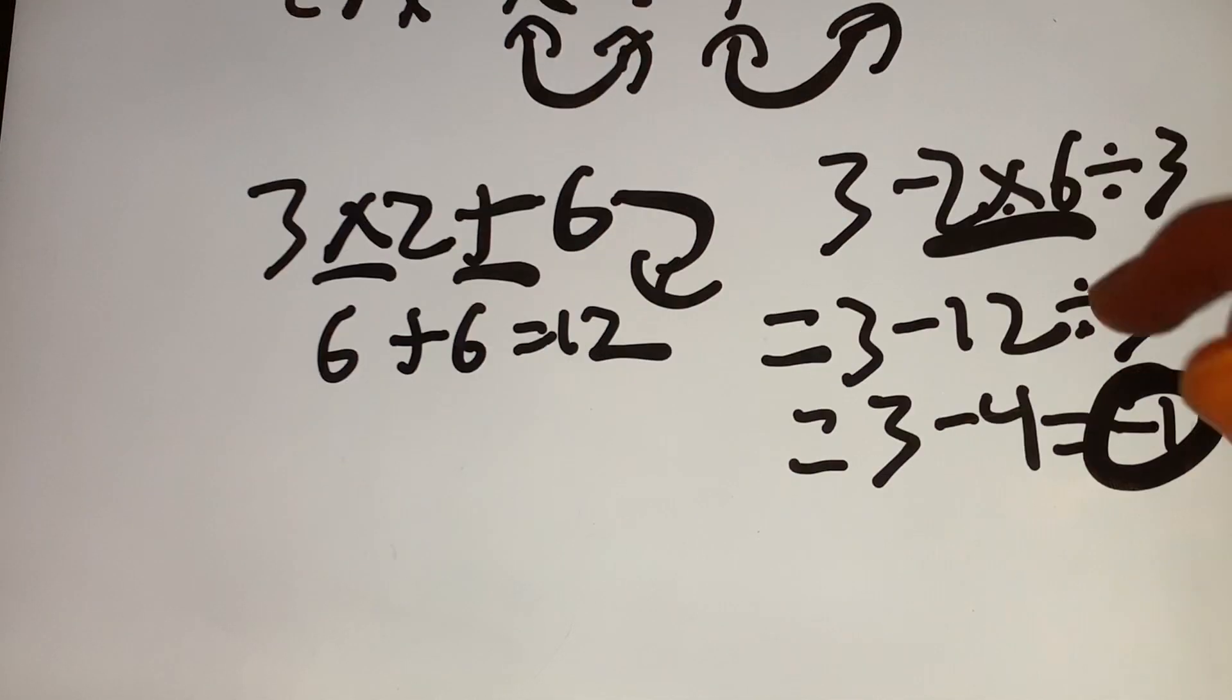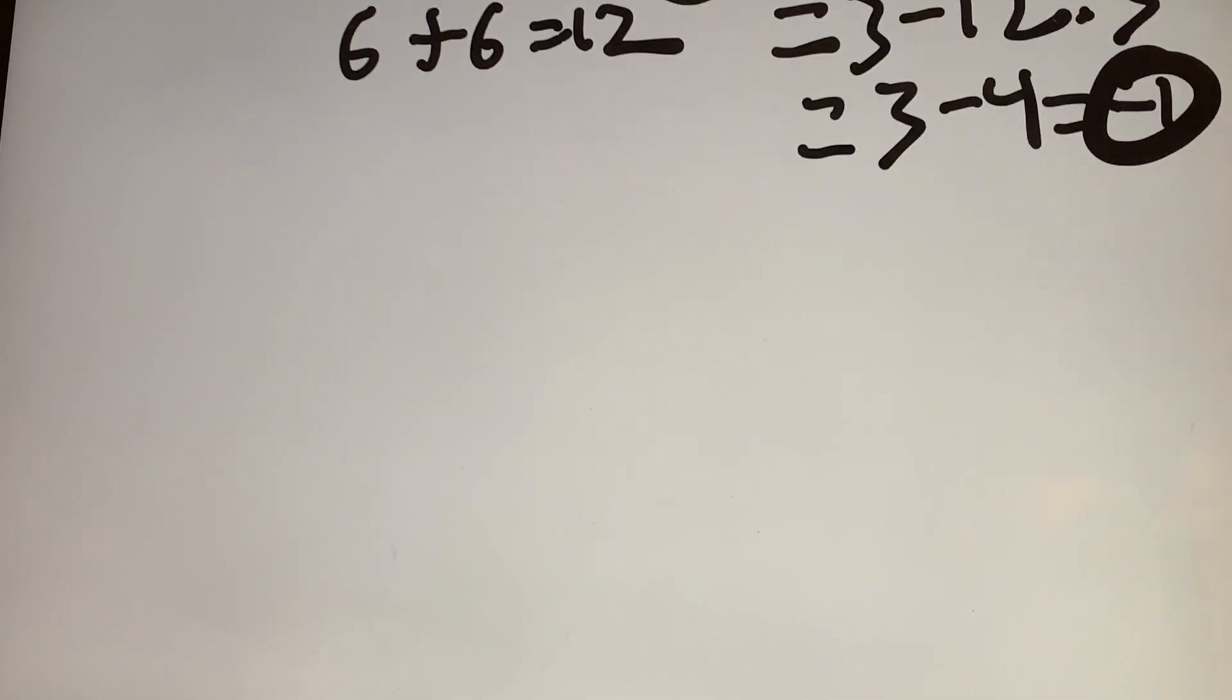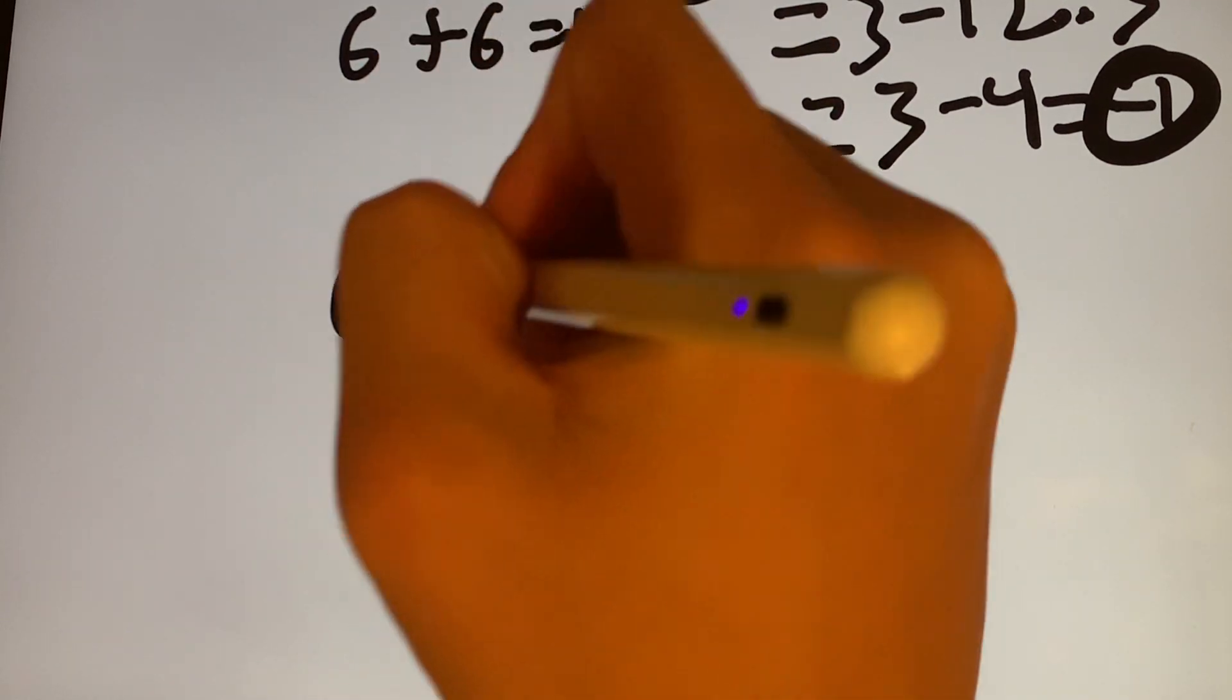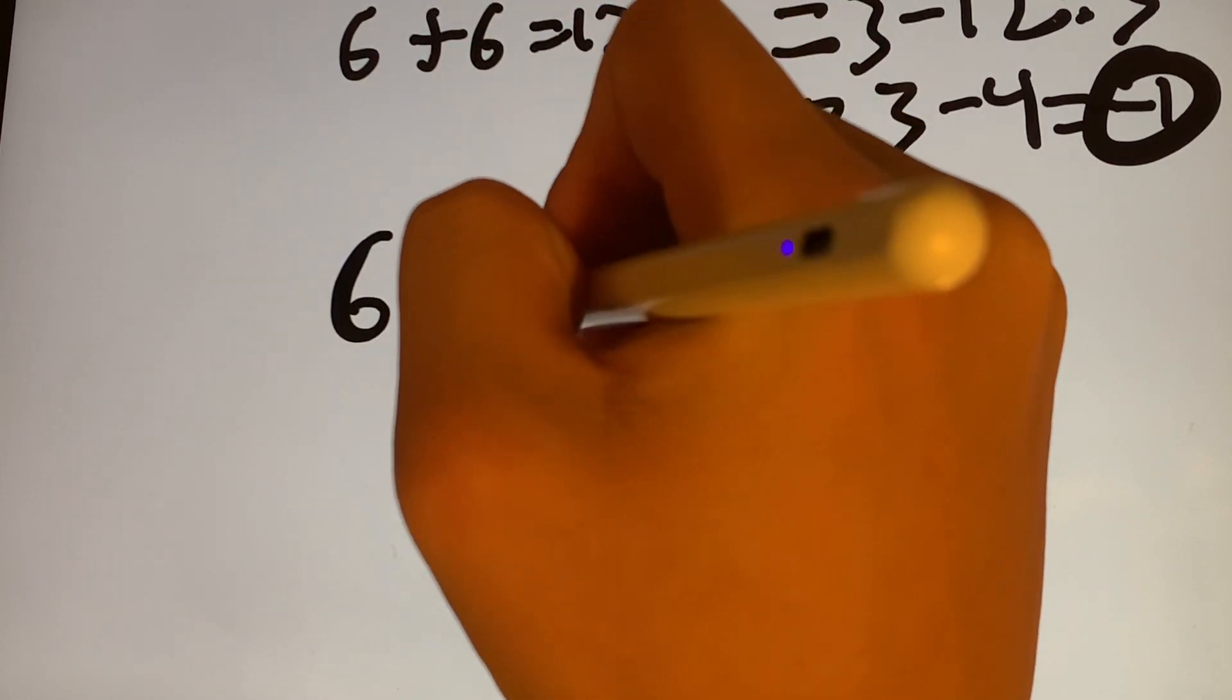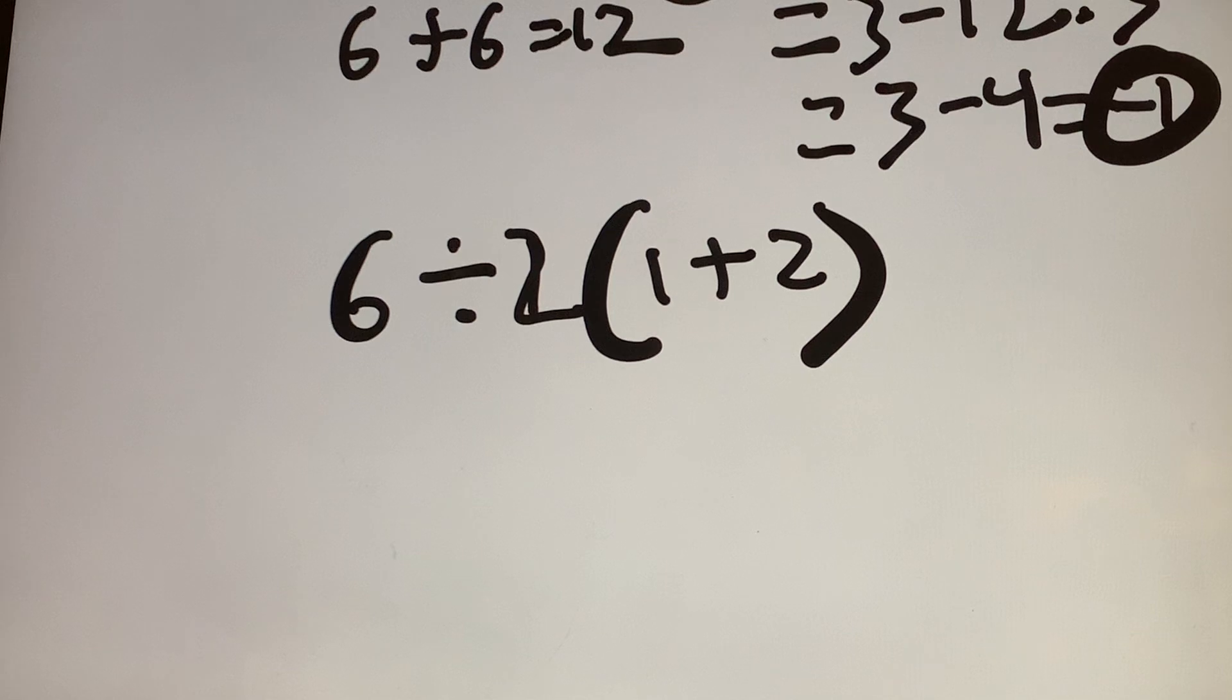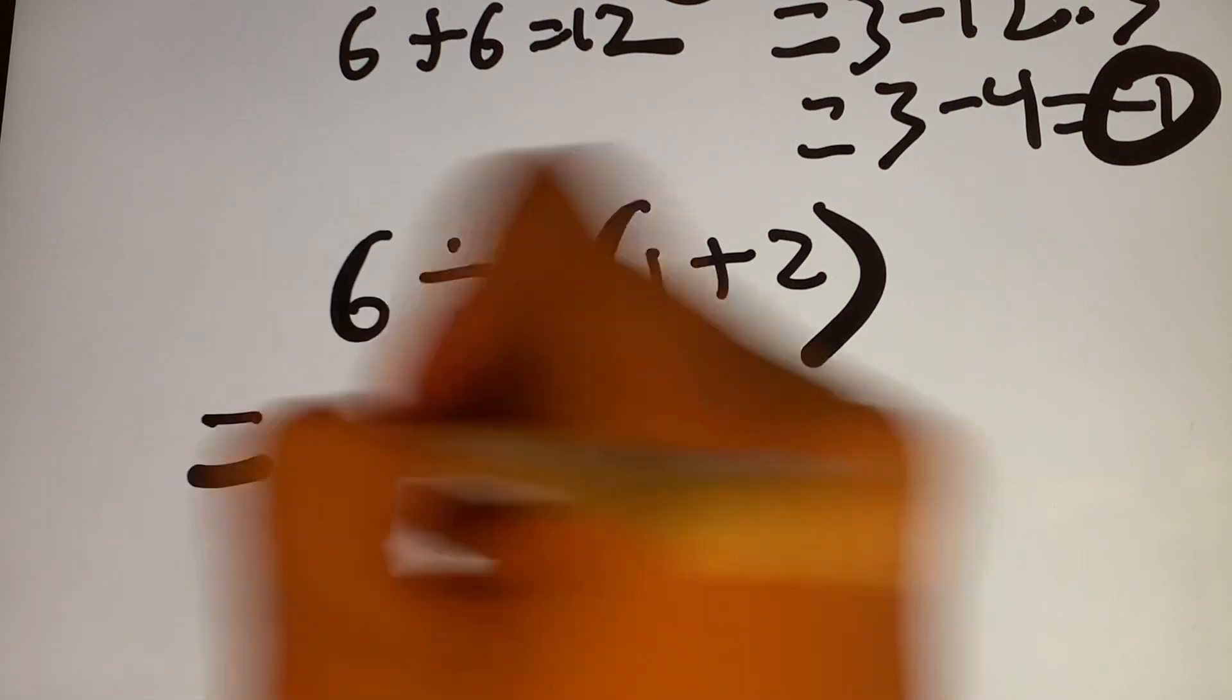So now let's do the question from the thumbnail, which you guys are probably waiting for. So we have 6 divided by 1. No, it's 6 divided by 2 times 1 plus 2. So given this expression, what's the first thing that we need to do?